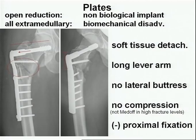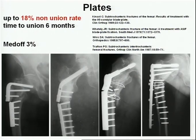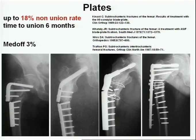All plates are extramedullary, so they have a long lever arm, no lateral buttress, and cannot perform compression — it's a static mode except for the MEDOF sliding plate. They also have poor proximal fixation because the implant normally stops at the level of the fracture. Reported non-union rates are 18%, and between 18% and 3% with the MEDOF plate. If the fracture doesn't unite fast enough, the implant will fail due to the long lever arm and soft tissue detachment.